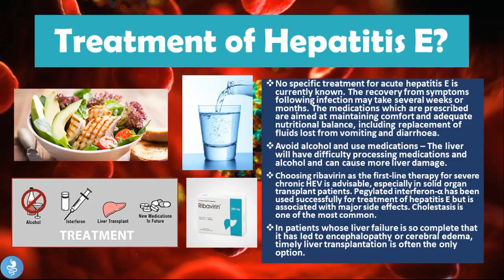Ribavirin may be chosen as a first-line therapy for severe chronic hepatitis E virus infections, and is especially advisable in solid organ transplant patients. Pegylated interferon alpha has also been used successfully for treatment of hepatitis E, but is associated with major side effects such as cholestasis. In patients whose liver failure has led to encephalopathy or cerebral edema, a timely liver transplantation is often the only option. For immunocompromised patients — such as those undergoing chemotherapy or suffering from HIV/AIDS — drugs like ribavirin or pegylated interferon are needed, whereas a normal healthy individual typically does not require specific treatment.